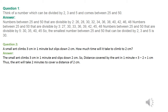Question number 2: a small ant climbs 3 cm in 1 minute but slips down 2 cm. How much time will it take to climb 2 cm? The distance covered by the ant in 1 minute equals 3 minus 2 = 1 centimeter. Thus the ant will take 2 minutes to cover a distance of 2 centimeters. Please note down this answer in your notebook.